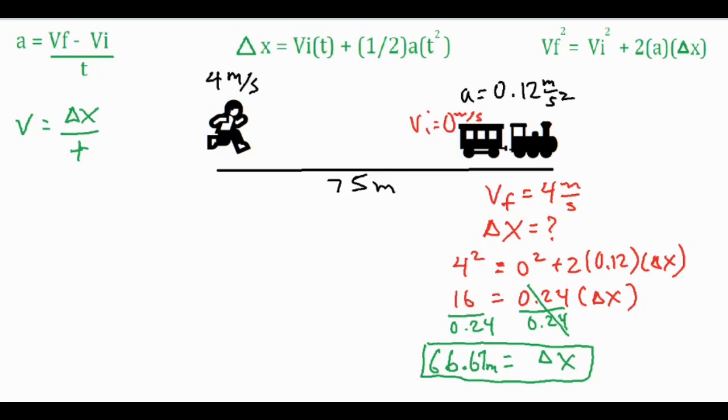Now we basically have all the variables we need to solve for t. We have the acceleration, we have the vi, we have the vf, and now we have the delta x. We have plenty of options, so we can go ahead and use the first or the second formula. I'm just going to go ahead and pick the second one. So the delta x we just found is 66.67 equals vi t, and there is no vi, the vi is zero, so we can skip the vi t part and just call it one half a t squared.